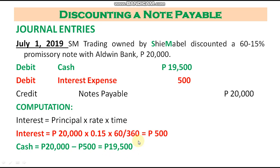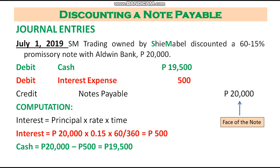Our journal entry is: debit cash 19,500, debit interest expense 500, credit notes payable 20,000. The 19,500 is the cash received after deducting interest, the 500 is interest expense, and the 20,000 is the face of the note.